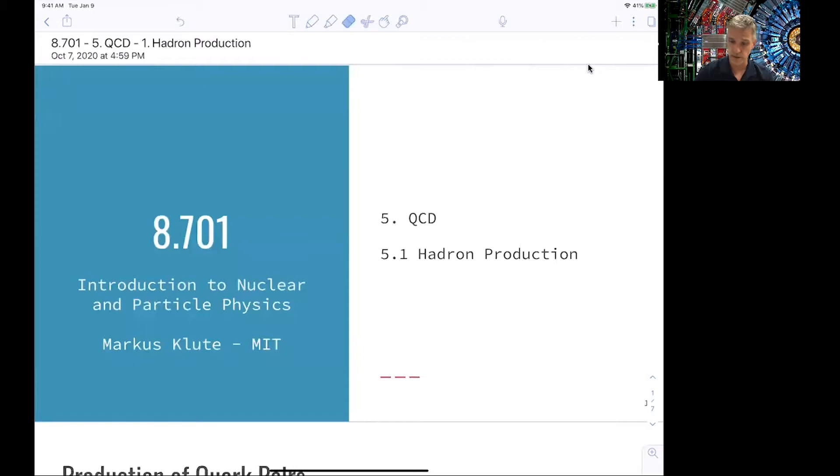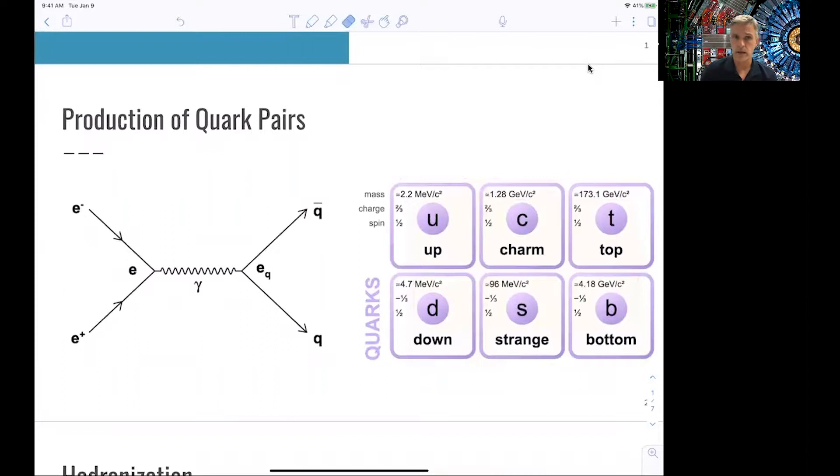We want to produce quark and antiquark pairs, and we do this in electron-positron collisions. We have studied in detail this first part of the diagram already. Specifically, we calculated the cross-section of muon and antimuon production, and we also have seen what changes when we have same particle in the final state. So now we replace the muons with our quark and antiquark pairs. As the first step, we want to remind ourselves of the available quarks in this discussion.